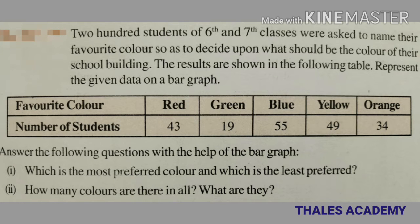Here is an example: 200 students of sixth and seventh classes were asked to name their favorite color, so as to decide what should be the color of their school building. The results are shown in the following table. Represent the given data on a bar graph.